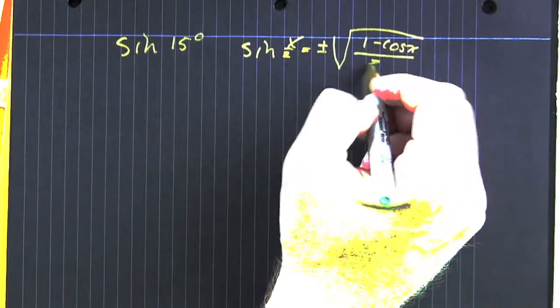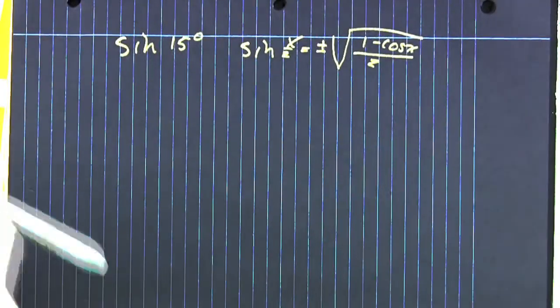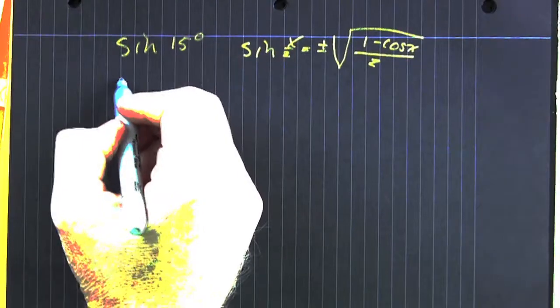Half angle. That's right, the half angle identity: 1 minus cosine over 2. We're going to take the square root of that.